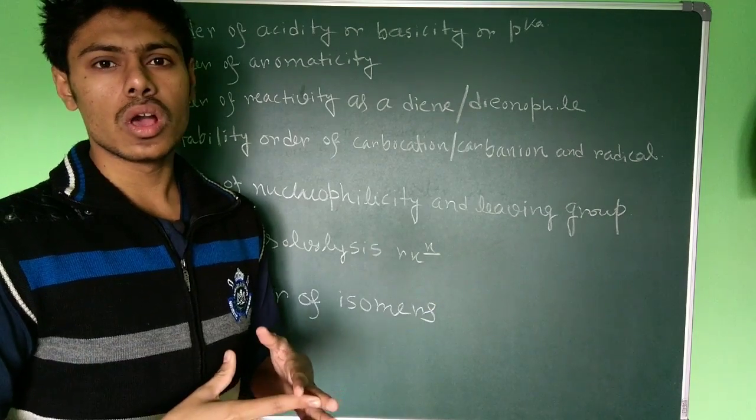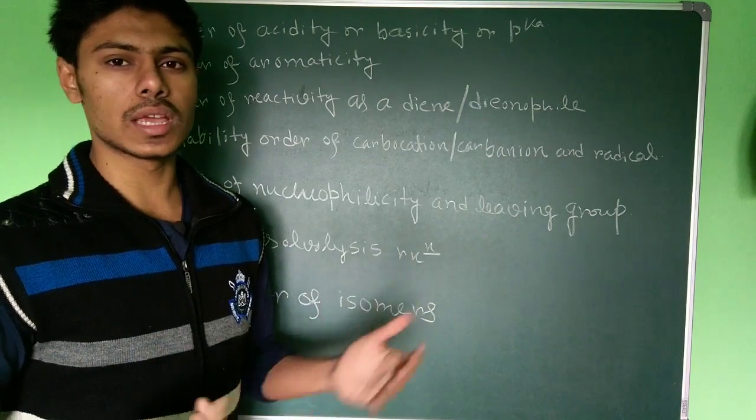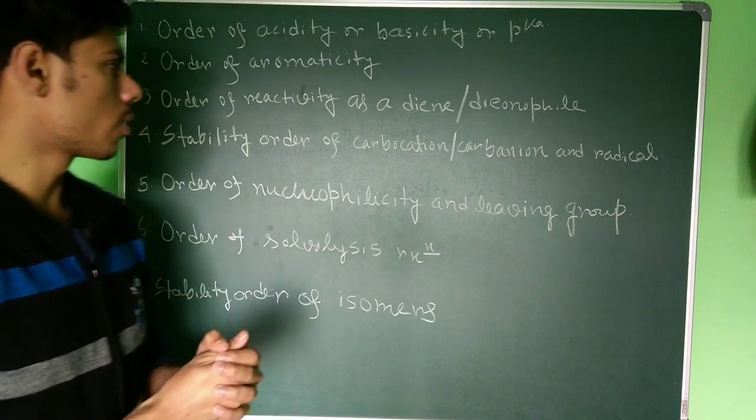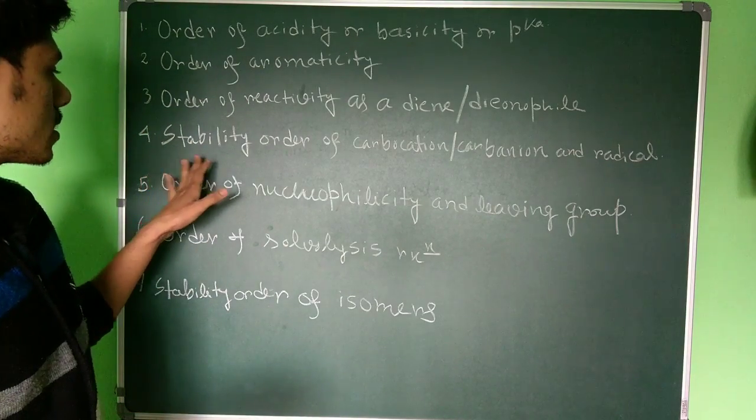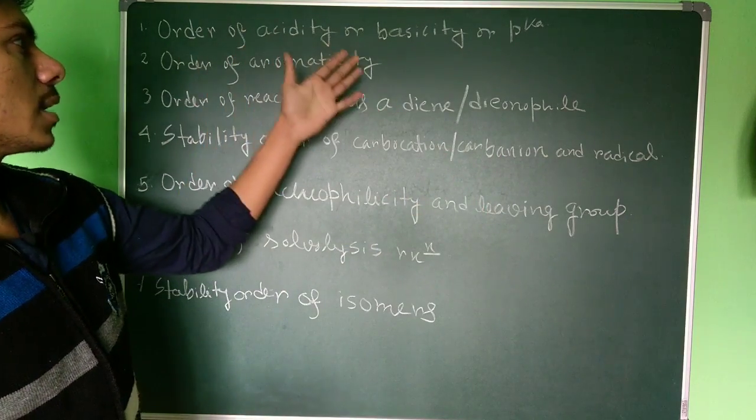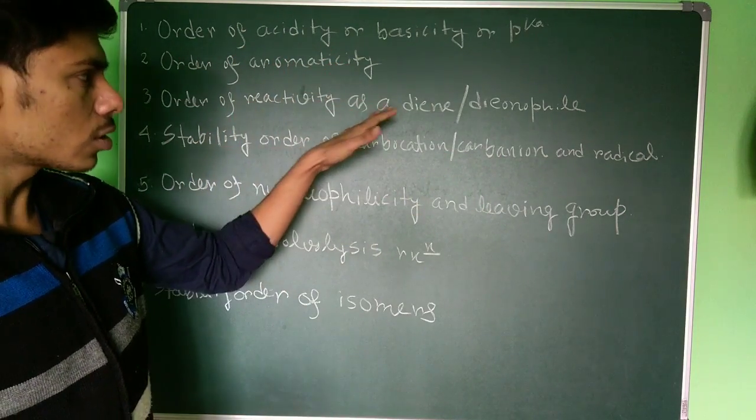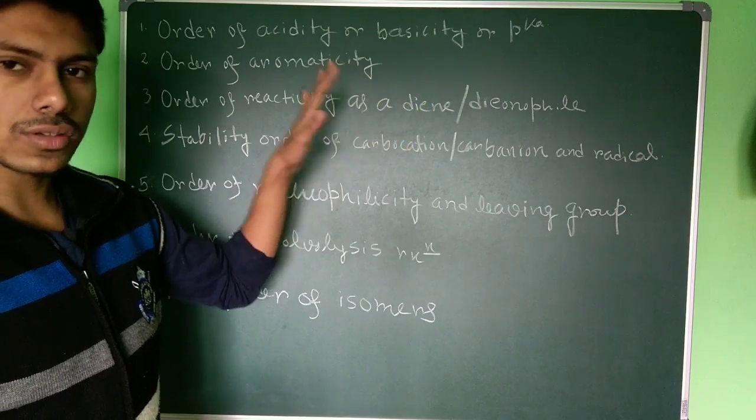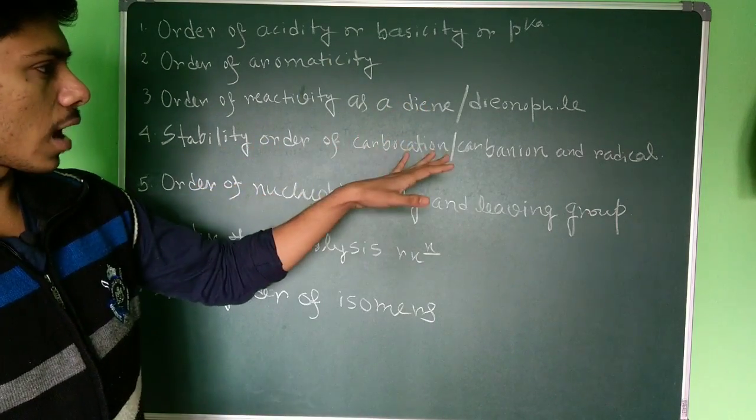The fourth point is the stability order of carbocation, carbanion, and radical. Again, this is very important like acidity and basicity. Also the diene-dienophile part is also important. But this carbocation, carbanion, and radical—a lot of examples are there. More examples you practice, more helpful it will be.